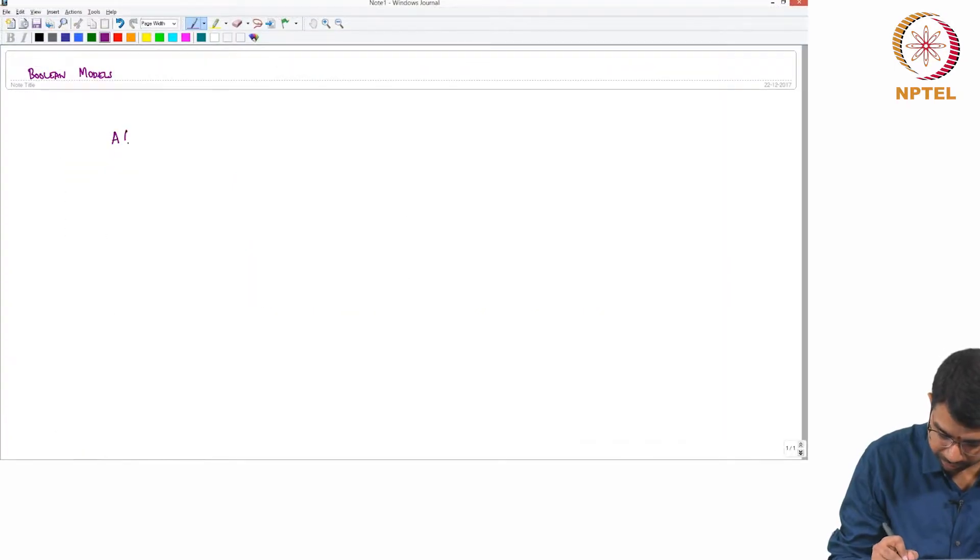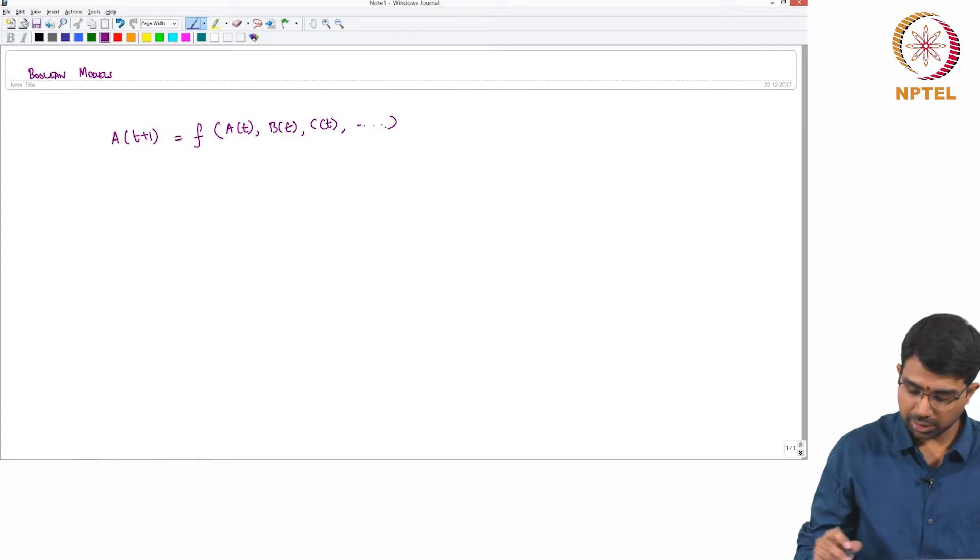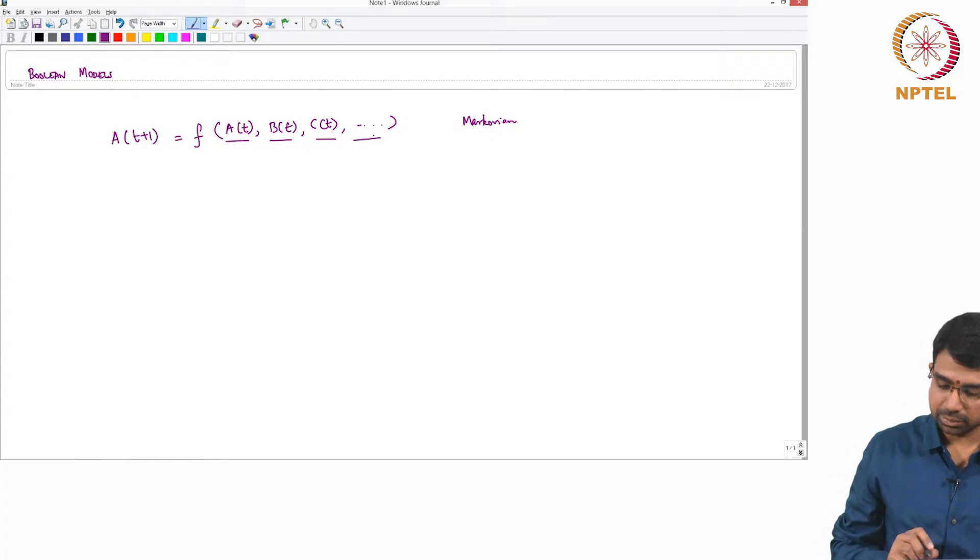So you basically have a of t plus 1 is f of a of t, b of t, c of t and so on. So this is almost like a Markovian, you have just one step, one piece of memory, one time step that you are talking about. So a of t plus 1 directly depends on a of t. This is called synchronous.